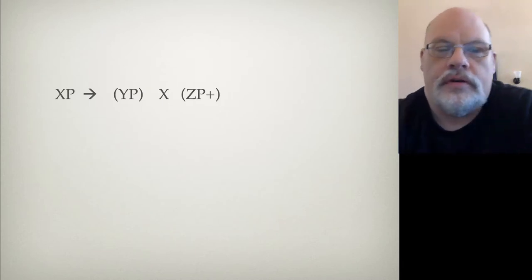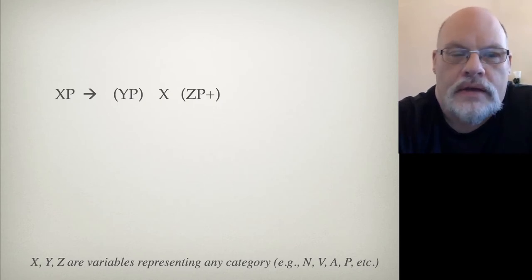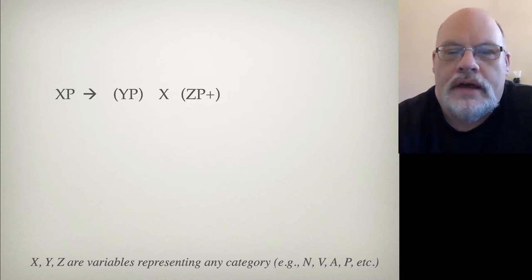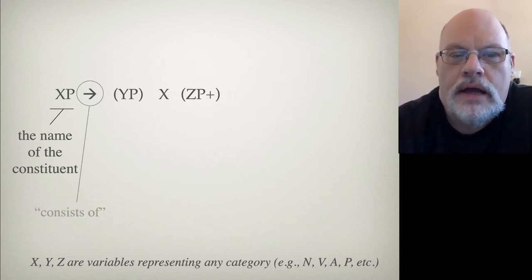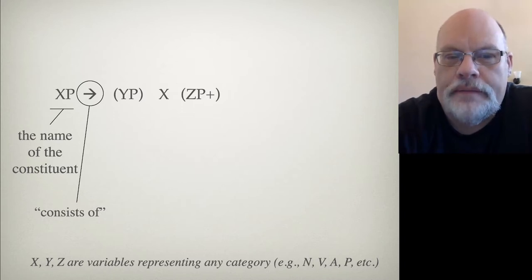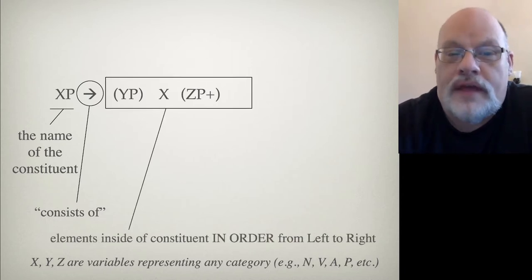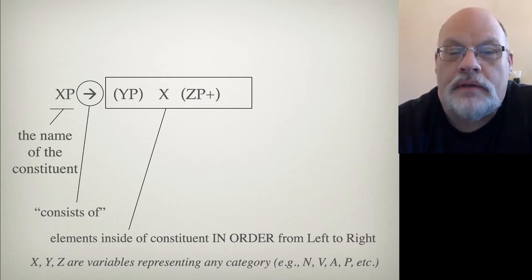Let's look at how these rules are structured. We're using X, Y, and Z as variables to represent any category. So the X could be a noun, a verb, whatever. The YP could be a prepositional phrase, the ZP could be an adjective phrase, whatever — this is just an abstract representation. On the left-hand side of the rule, we have the name of the constituent we're constructing, then we have an arrow, and the arrow should be read as 'consists of.' The material to the right of the arrow are the elements that go underneath that XP in the tree. They are in order from left to right — a YP followed by an X followed by a ZP.